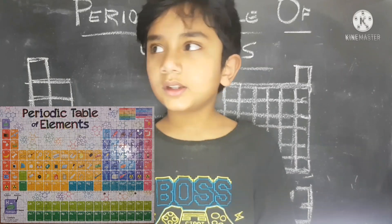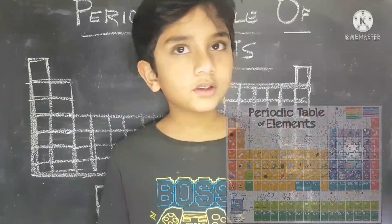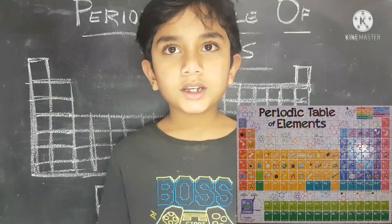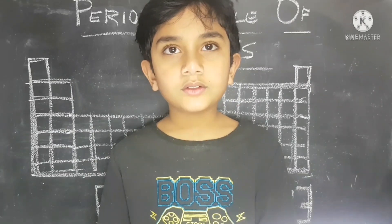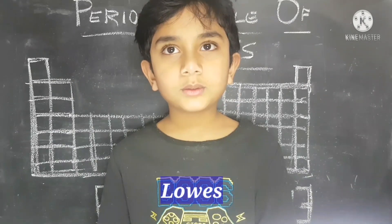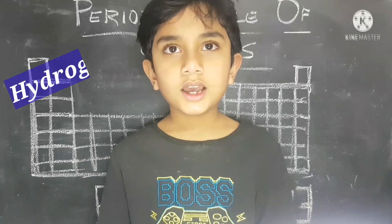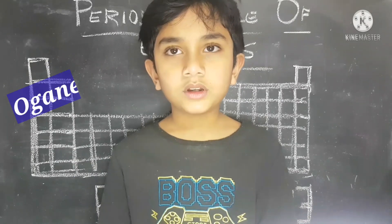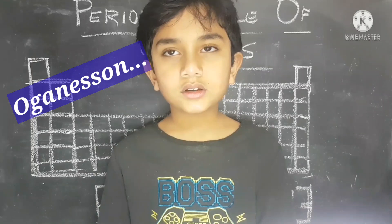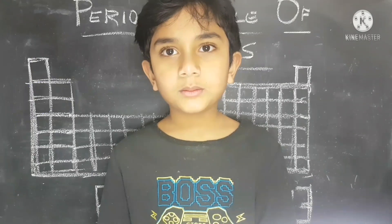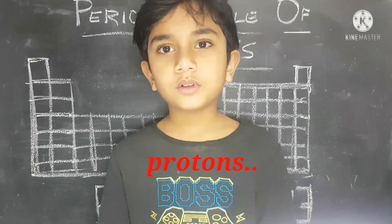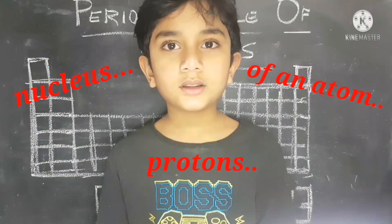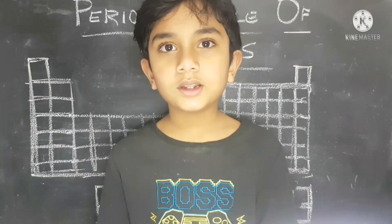The Periodic Table of Elements is a display of chemical elements organized by atomic numbers, from the element with the lowest atomic number, Hydrogen, to the highest atomic number, Oganesson. The atomic number is the number of protons in the nucleus of that element.